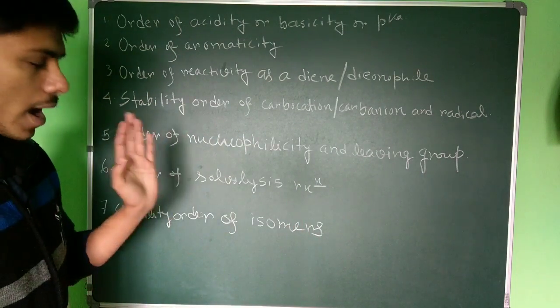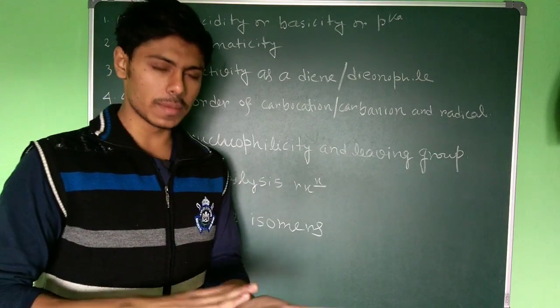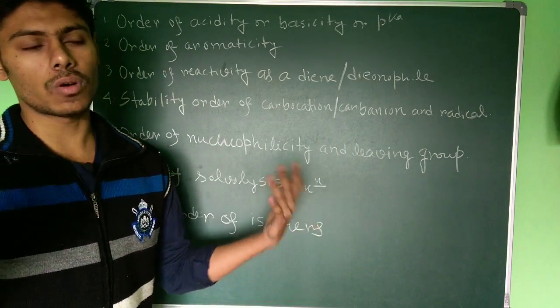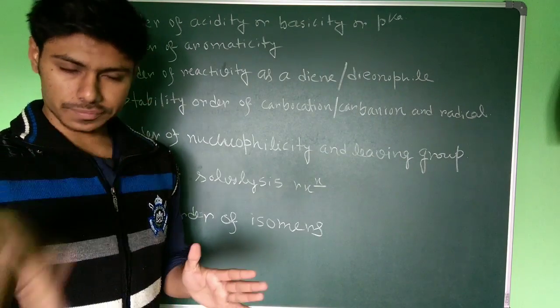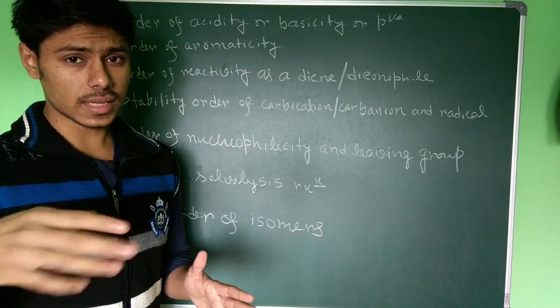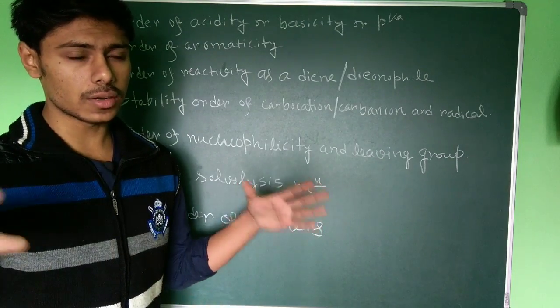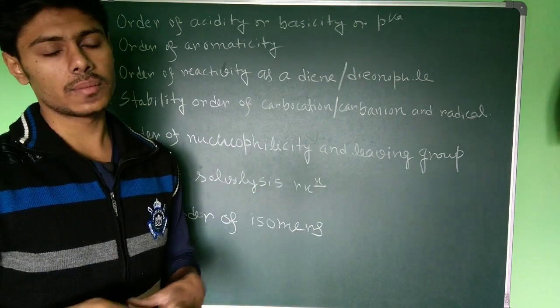Last but not least is the stability order of isomers. It may be cyclohexane different conformations or it may be acyclic compounds. Different conformers and different configurations have different kinds of stability.